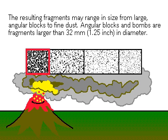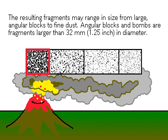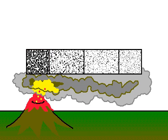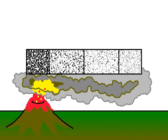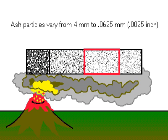The resulting fragments from this gaseous eruption may range in size from large, angular blocks to fine dust. Angular blocks are fragments larger than 32 millimeters in diameter. Lapilli vary from 32 millimeters to 4 millimeters.